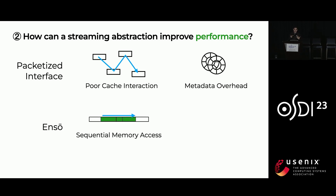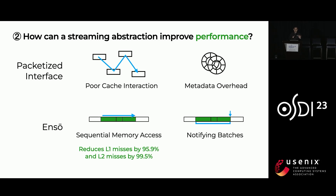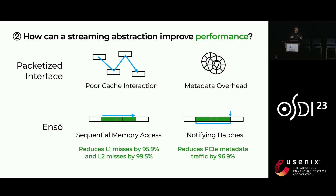In ANSO, because data is always appended after the previous data, we no longer need per-packet metadata. We are able to notify batches of packets at the same time, and this lets us considerably reduce metadata traffic over PCIe and the CPU cycles spent processing this metadata.